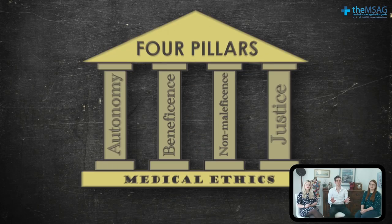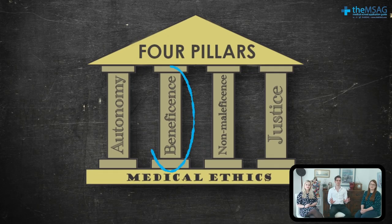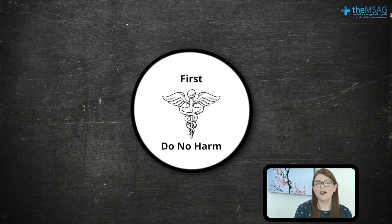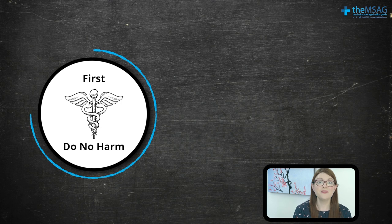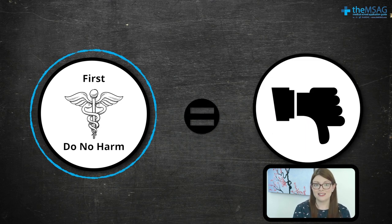So, what about the next ethical pillars: beneficence and non-maleficence, and justice? Non-maleficence is really important here. 'First, do no harm' is the maxim we all work by as doctors. By performing an abortion, we end a life which must be considered the ultimate harm. Therefore, in terms of non-maleficence, it is clear that abortion is wrong.